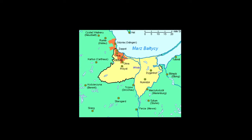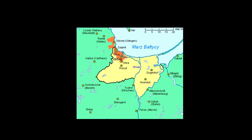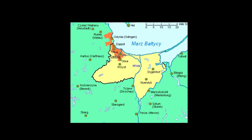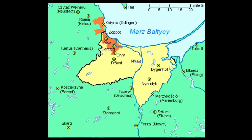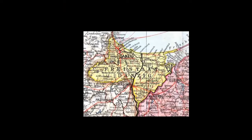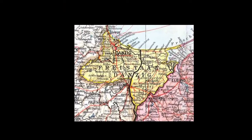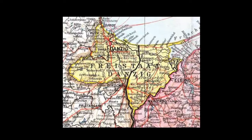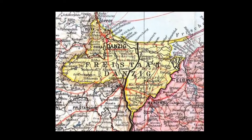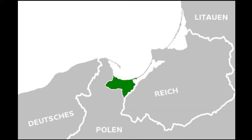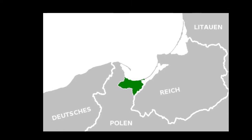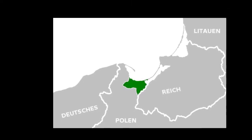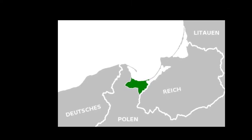The Nazis classified the Poles and Jews living in the city as subhumans, subjecting them to discrimination, forced labor, and extermination. Many were murdered at Nazi concentration camps, including the nearby Stutthof camp — now Sztutowo, Poland. During the city's conquest by the Soviet Army in the early months of 1945, a substantial number of citizens fled or were killed.